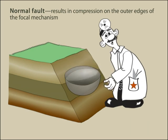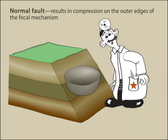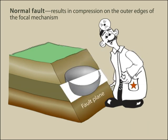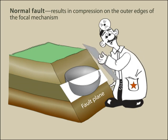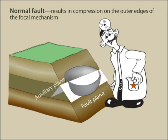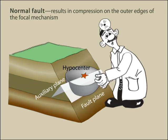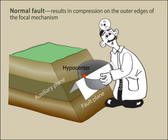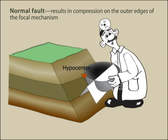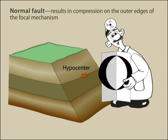This is the focal mechanism signature of an earthquake on a normal fault produced by extensional forces. Because of the way the fault plane intersects the bottom of the focal sphere, the boundary between the regions on the focal mechanism is curved.